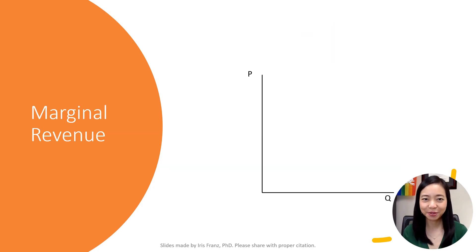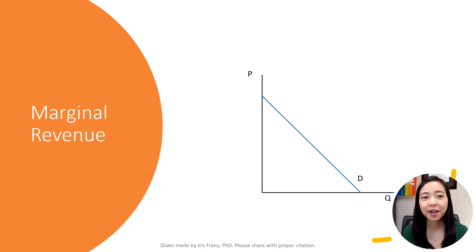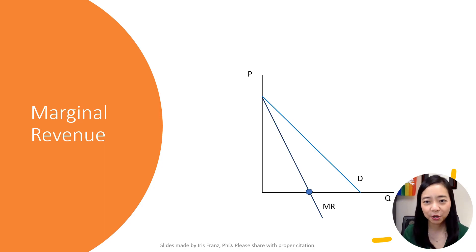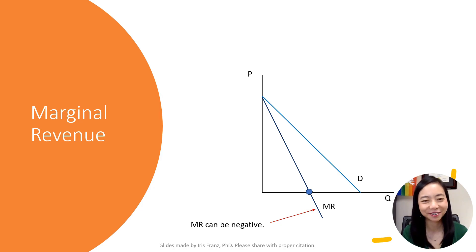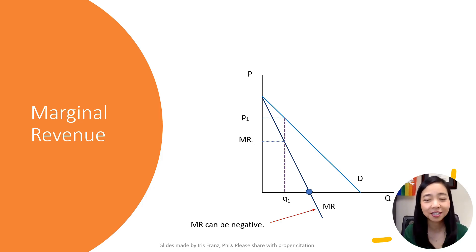Here is a tip about how to sketch the demand curve and the marginal revenue curve. First, sketch your downward sloping market demand curve. Second, find the middle point between zero and the intersection of the demand curve and the horizontal axis. From that point, sketch your marginal revenue curve. Notice that marginal revenue can be negative. Except for the first unit, pick any quantity Q1, and you will find that the price is higher than the marginal revenue.